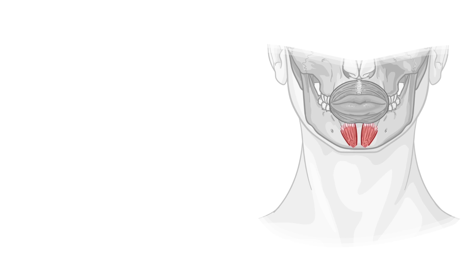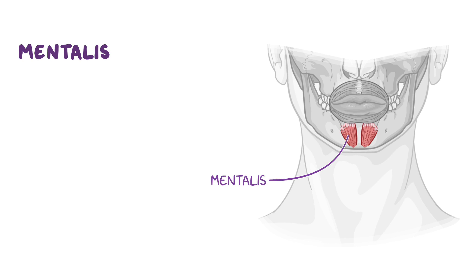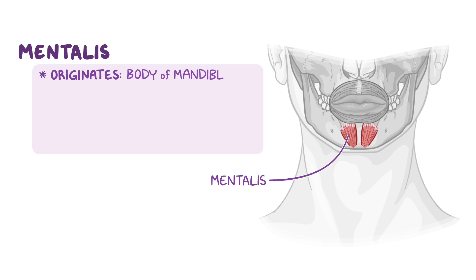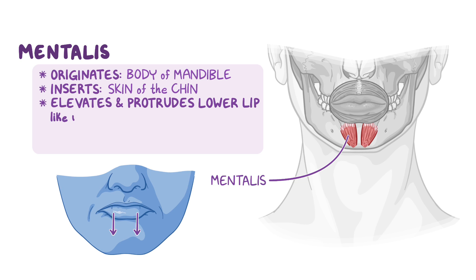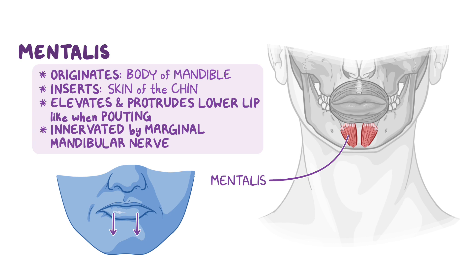Now let's discuss a muscle of the chin called mentalis. The mentalis originates on the body of the mandible and inserts into the skin of the chin. It elevates and protrudes the lower lip, like when pouting, and is innervated by the marginal mandibular nerve.